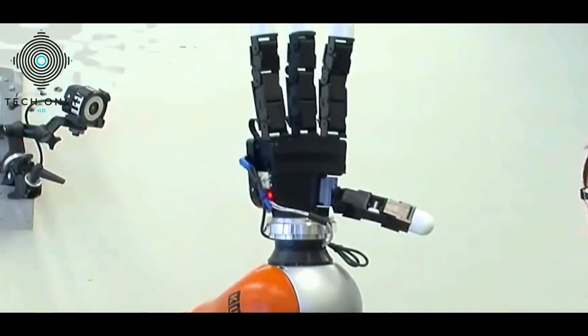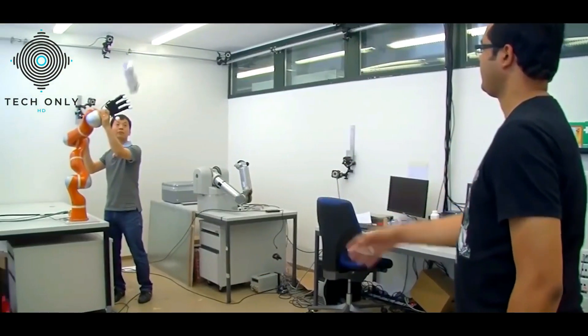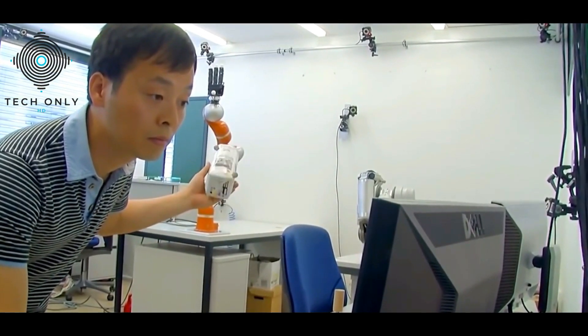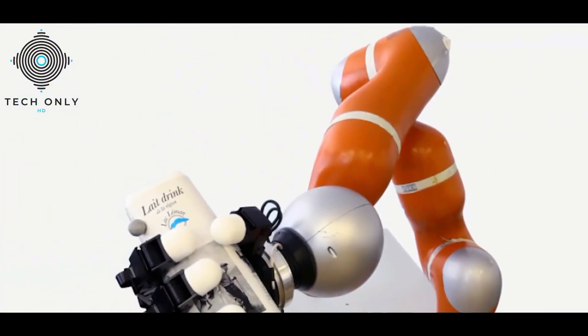The team taught the robot to catch by manually guiding the arm in the appropriate direction when an object was thrown. The computer software retains the information, which enables the device to quickly react to data changes. Each movement takes a mere five hundredths of a second.